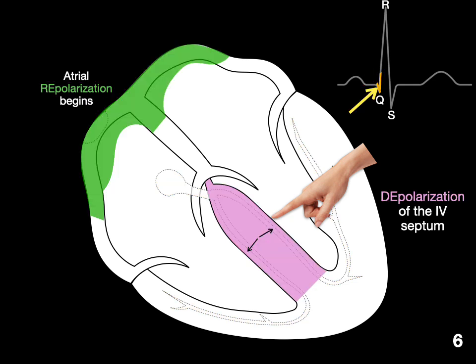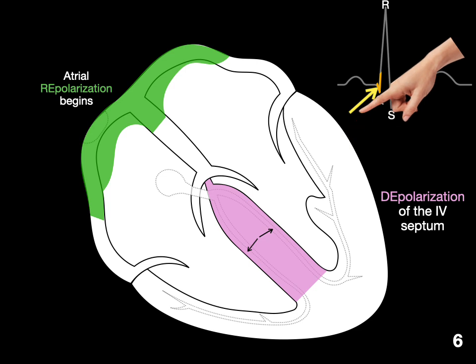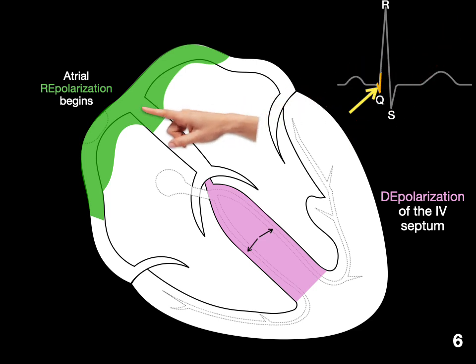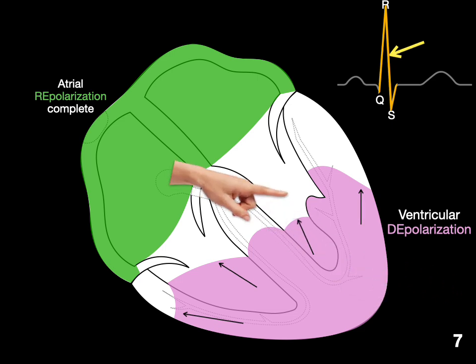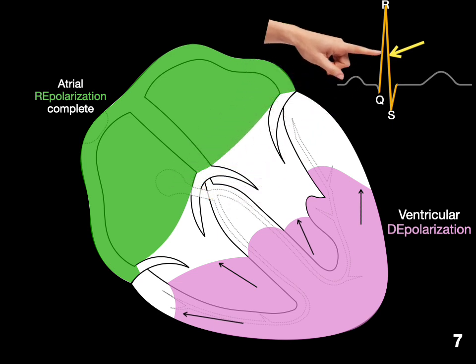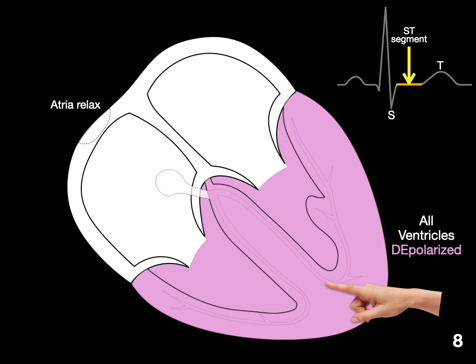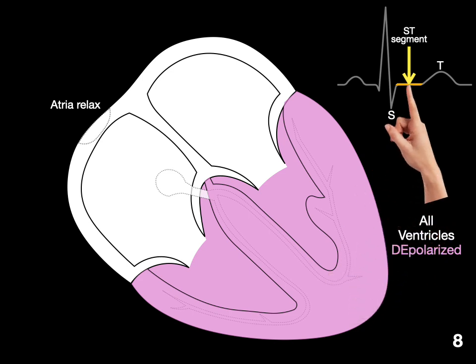So then, the depolarization of the interventricular septum begins first, and that's the beginning of that Q wave. Now, the atrial repolarization is beginning at this point as well, but we do not see it on the ECG because of the size of the QRS complex. The ventricular depolarization continues, but you'll notice that part of the ventricle is not depolarized, which is why we're getting this QRS complex. Because when all the ventricles are depolarized, we have this isoelectric ST segment that we see on the ECG.